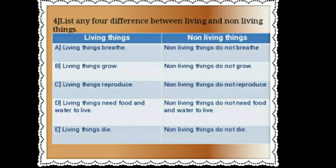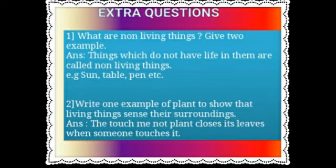Here we completed the test book exercise question answers. Now I will give some extra questions which are not in your test book. Extra question one: what are non-living things? Give two examples. Answer: things which do not have life in them are called non-living things. For example, sun, table, pen, etc.